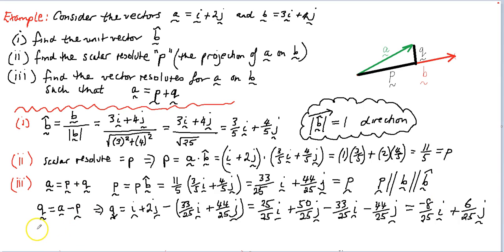So there you have it. So we've resolved the vector A has two components, one parallel to the vector B, which is P. So that's equal to 33 on 25 I plus 44 on 25 J, and the vector Q, which is equal to negative 8 25ths I plus 6 25ths J. And there you have it. Just circle those two.